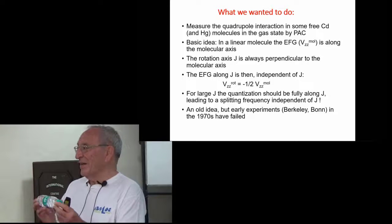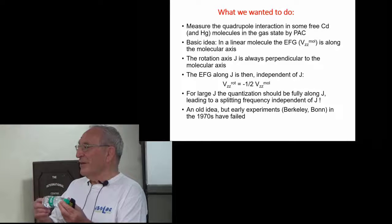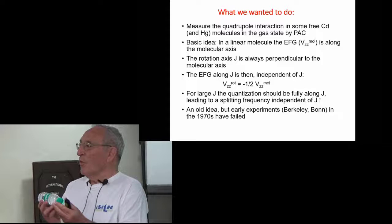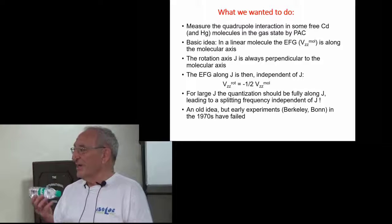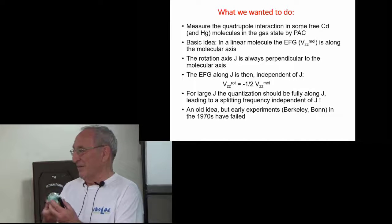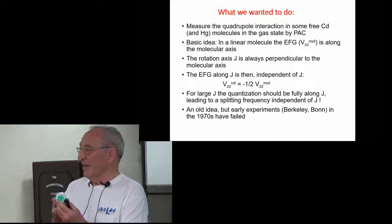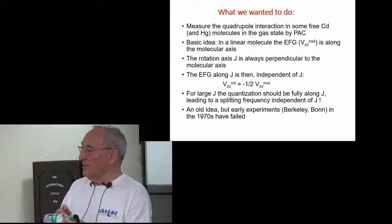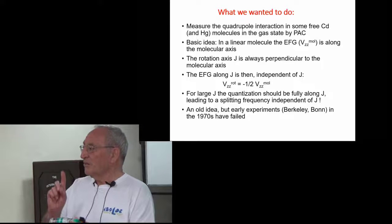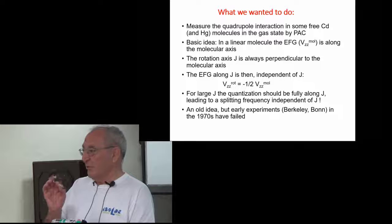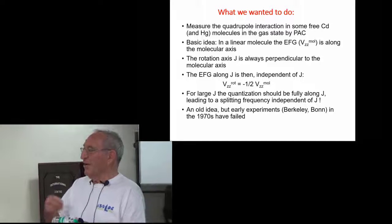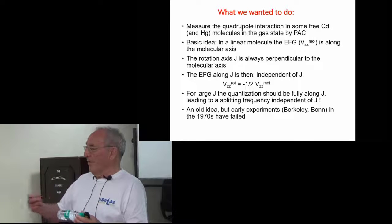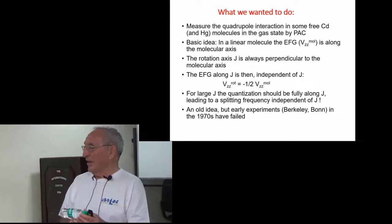However, in a linear molecule the field gradient is oriented along the molecular axis. When a linear molecule rotates, it has only one possibility: rotating perpendicular to its axis. That means the component of the field gradient along the rotation axis is fixed. It's namely exactly one field gradient - it's a second order tensor, so it's just simply one half the molecular one minus one half the molecular one.